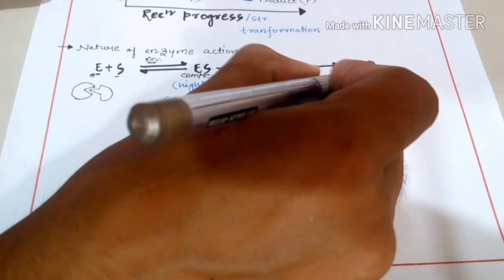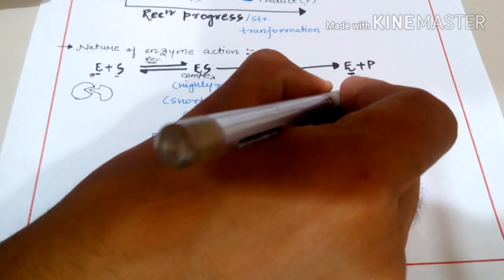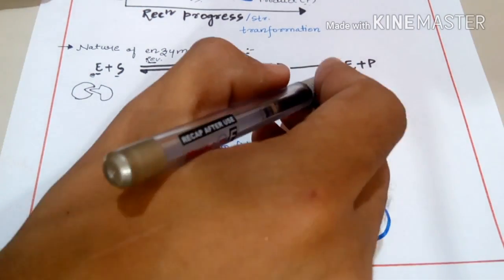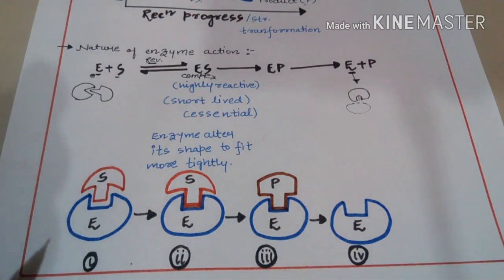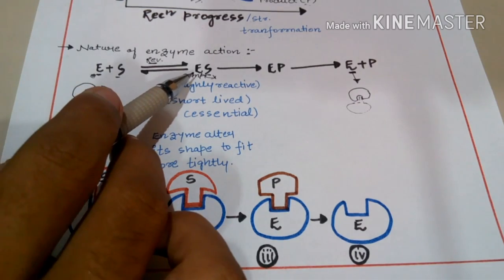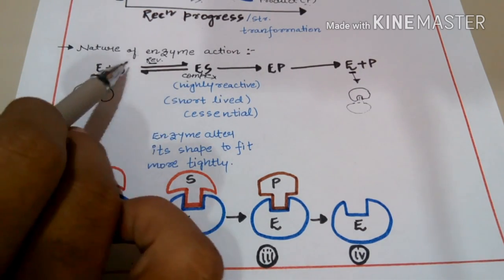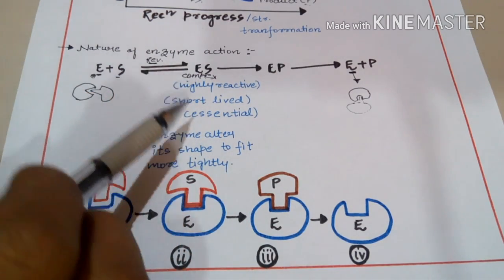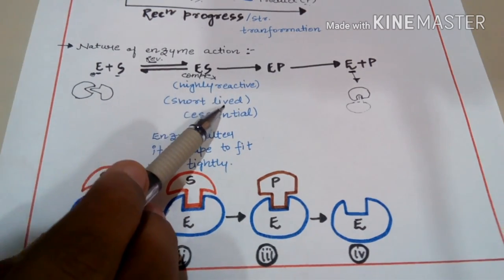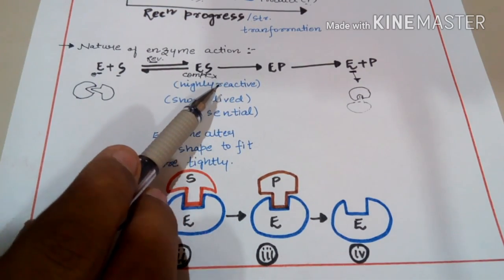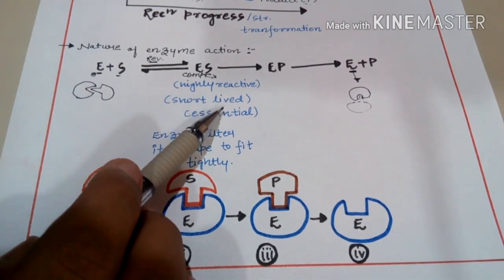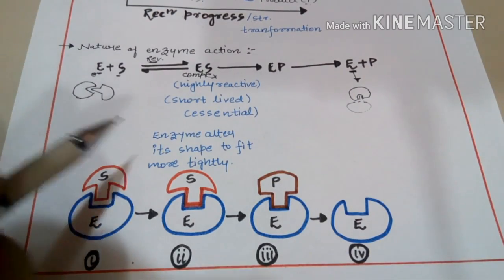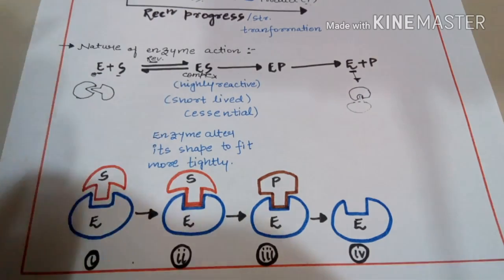The enzyme is not utilized in the reaction — it remains as such after the reaction, and its active site is free for another substrate to bind. Now, what are the properties of the enzyme-substrate complex? Since it is a transition state formed in between, as discussed earlier, all transition states are unstable. Because it is unstable, it is highly reactive and it is short-lived — it reacts immediately after its formation.